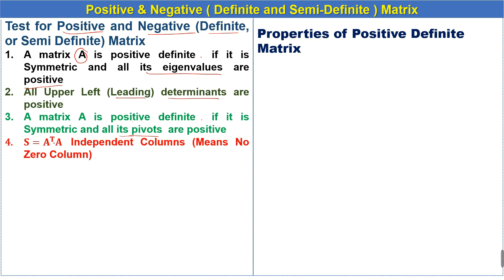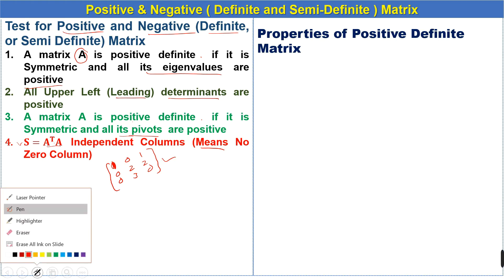The fourth test involves the product A-transpose times A. When we multiply A-transpose and A, we get a matrix X, and that matrix X should have independent columns — meaning no zero columns. For example, a matrix with columns [1,0,0], [0,2,3], and [1,2,0] has no zero columns and is an independent matrix. If a column is all zeros, it is a dependent column.